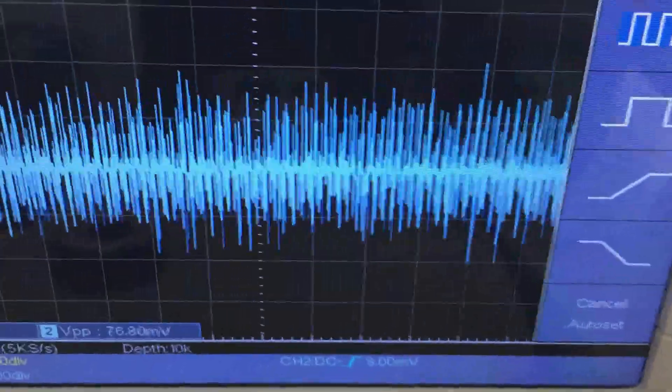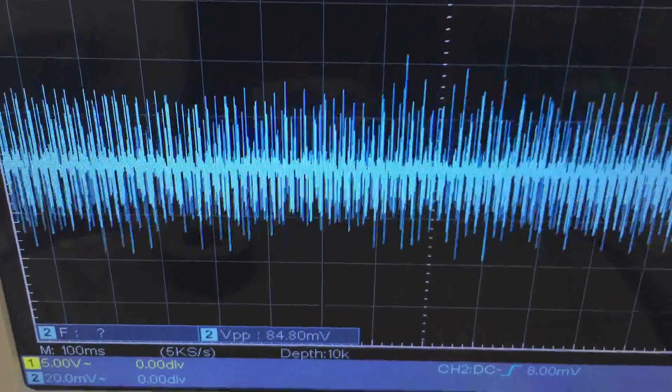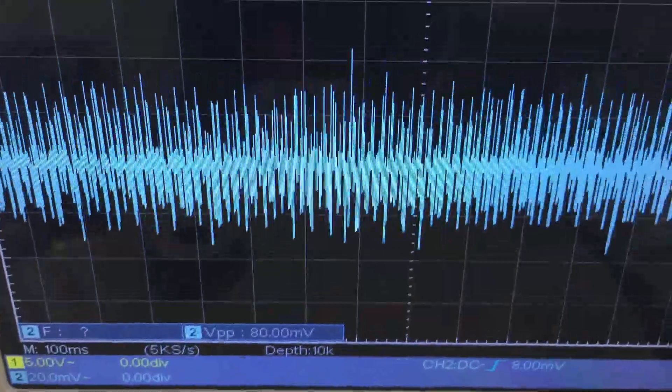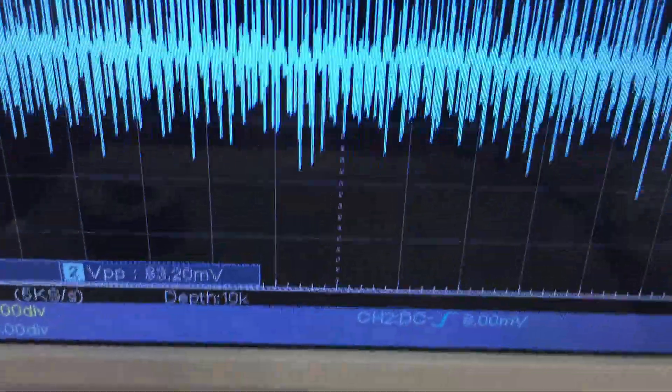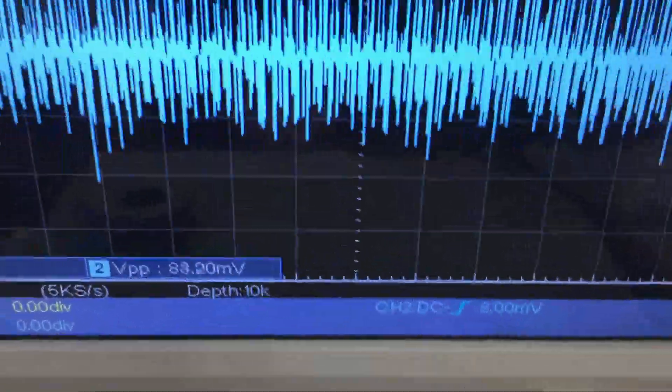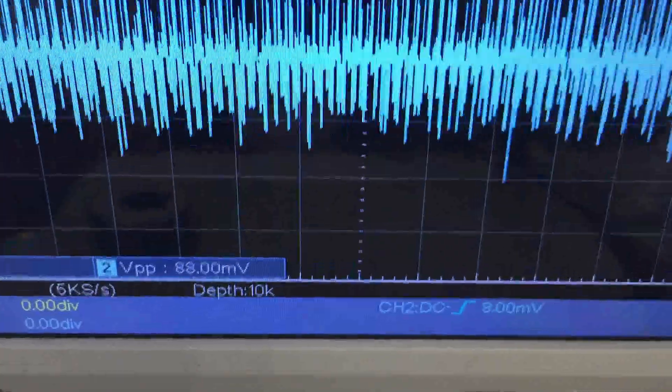You see the randomness of those spikes—can't really get a lock on the frequency. But I see that the transients are almost 100 millivolts.